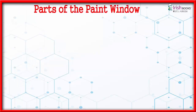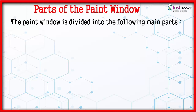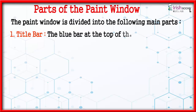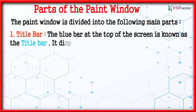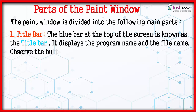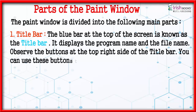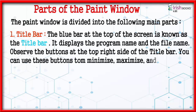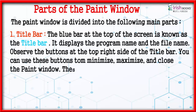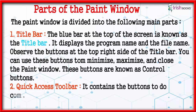Parts of the Paint Window. The Paint window is divided into the following main parts. Title Bar: the blue bar at the top of the screen is known as the title bar. It displays the program name and the file name. You can use the control buttons to minimize, maximize, and close the Paint window.